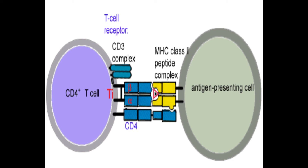MHC stands for Major Histocompatibility Complex, and the relevant subtype here is Class 2. Once the APC has done this, it will present the antigen to your T-helper cells, which can also be called CD4s. The CD4 molecule binds to MHC Class 2, while the peptide presented in MHC Class 2 binds to the specific T-cell receptor, abbreviated TCR, on the surface of the CD4 cells.